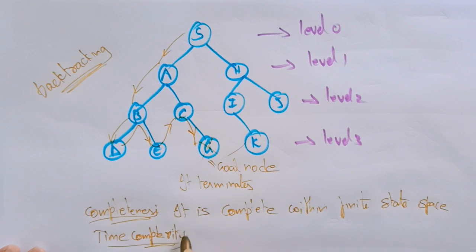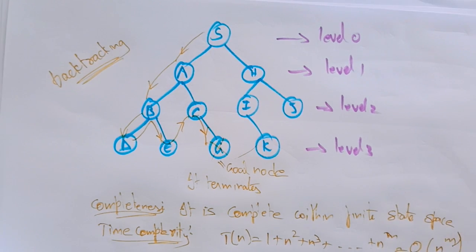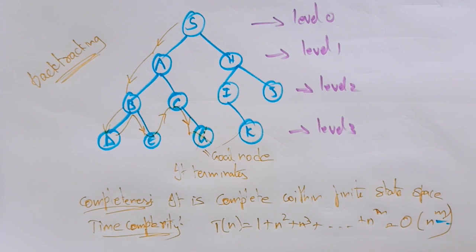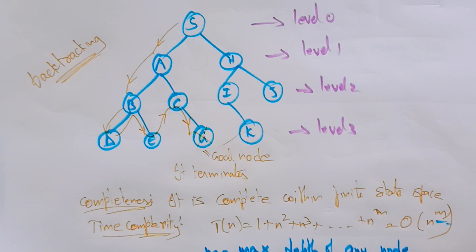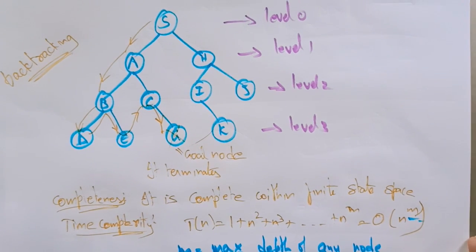What about the time complexity? The time complexity is T(n) = 1 + n² + n³ + ... + n^m, which is the order of n^m. Here m is the maximum depth of any node, and m can be much larger than d, where d is the depth of the shallowest goal node.